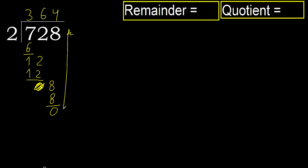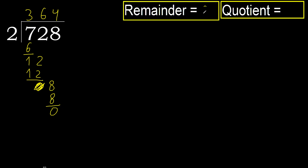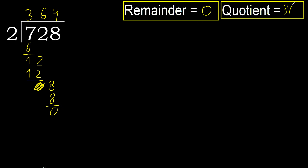There is no next number, therefore finish it. 0. Therefore 728 divided by 2 is here.